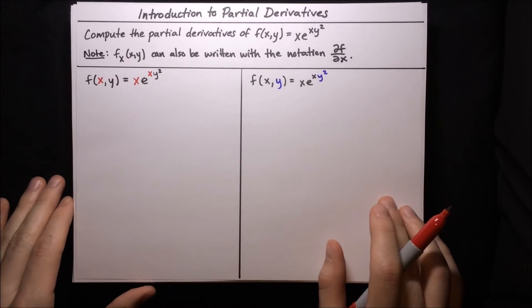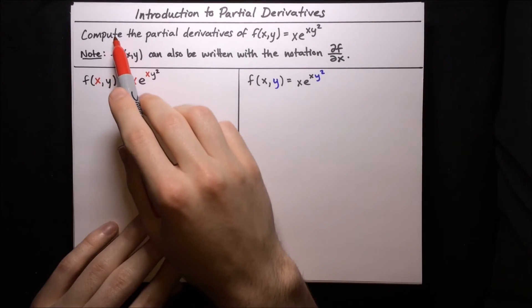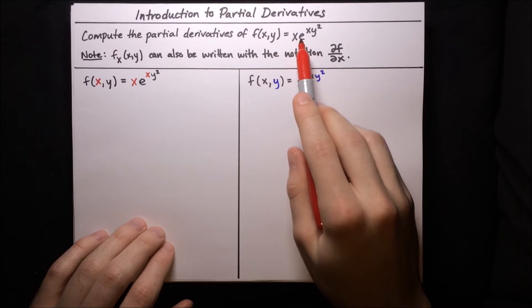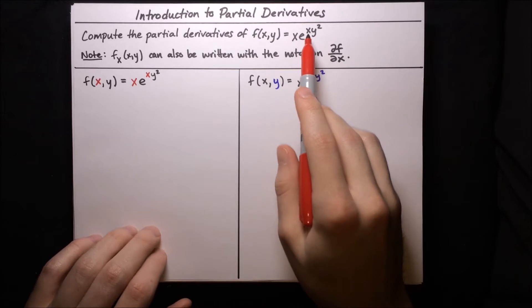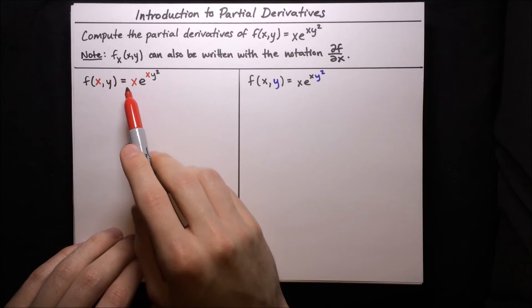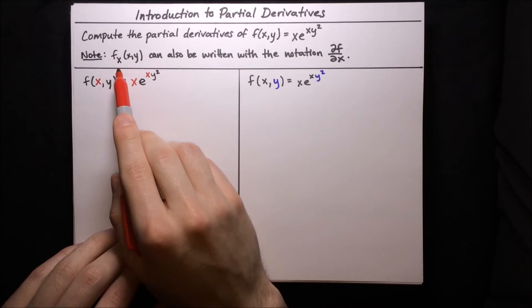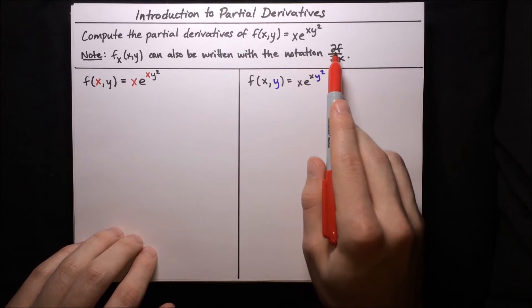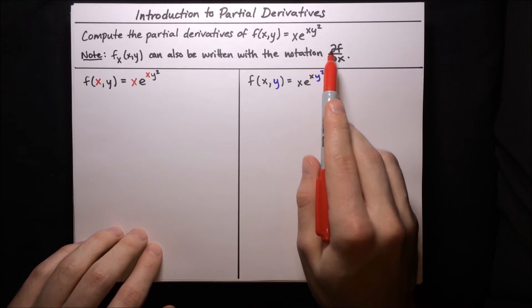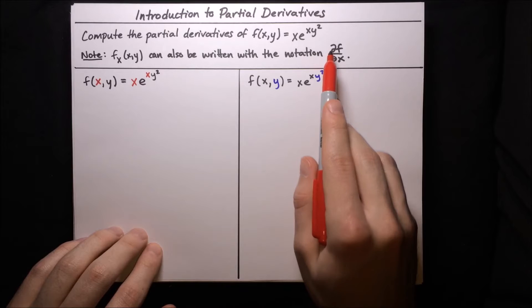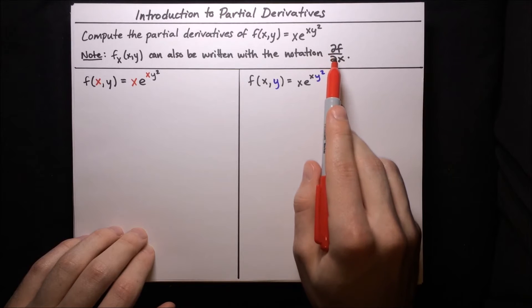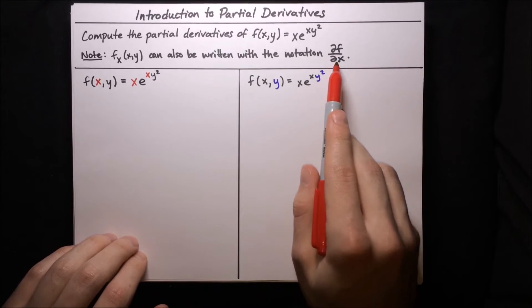Let's do another example. We want to compute the partial derivatives of the more complex function f(x, y) = x·e^(xy²). One note: the partial derivative with respect to x of f(x, y) can also be written using the notation ∂f/∂x — with curly d's to remind us this is a partial derivative. As we'll see, this lets us think of the derivative as an operator, making computations easier.